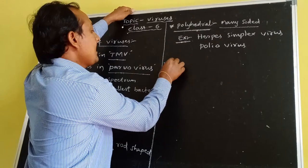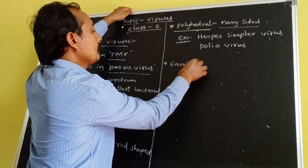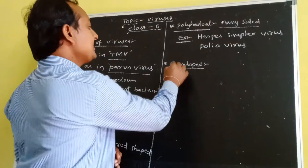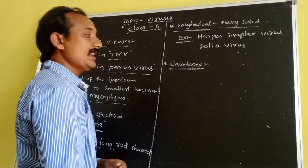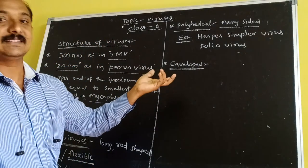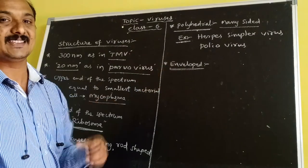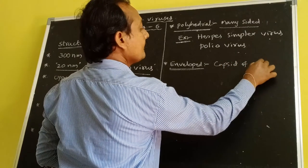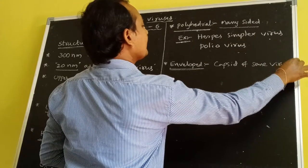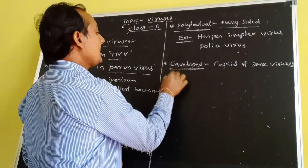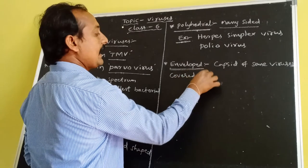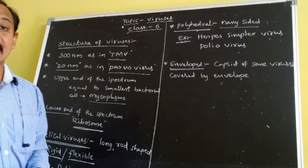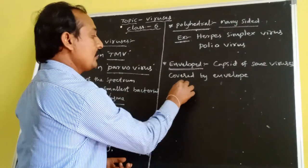The third type is enveloped viruses. Each virus consists of a nucleic acid surrounded by a protein coat called the capsid. In some viruses, the capsid is covered by an envelope. Such viruses are called enveloped viruses. An example is Influenza virus.